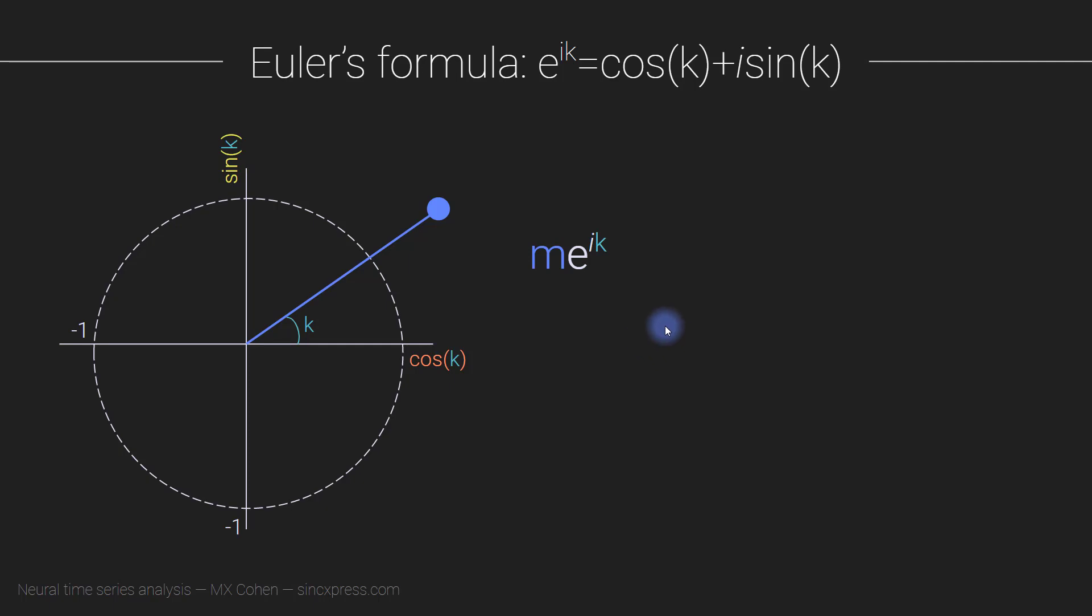So then it turns out that we can use this notation to represent a Fourier coefficient. This is a really compact and elegant way, informative way to represent a Fourier coefficient, because the amplitude of the Fourier coefficient is the m parameter, and the phase is this k parameter.